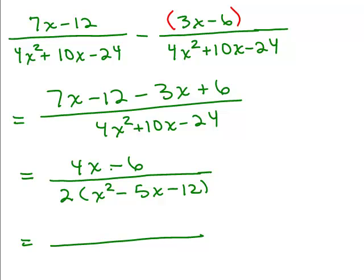And that's okay because we have to factor the numerator anyway. We could take a 2 out, and that gives me 2 times 2x minus 3. And in the denominator, we have the 2, right?